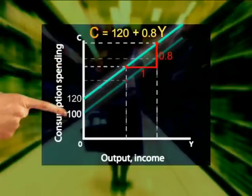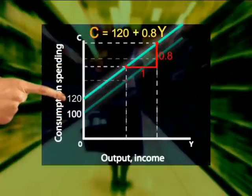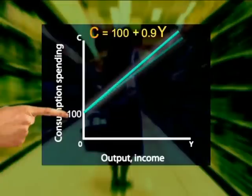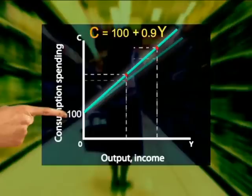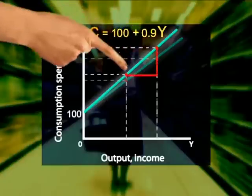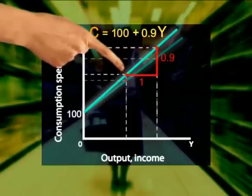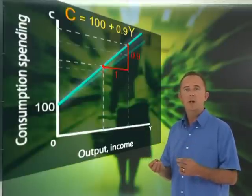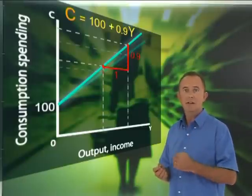And now, what if our marginal propensity to consume changes, say from 0.8 to 0.9? Well, a 100 rand rise in income now causes consumption spending to increase by 90 rand, not 80 rand. The slope of the consumption curve, determined by the increase in the marginal propensity to consume, now changes to reflect this higher percentage. The slope is now steeper, showing that for a given increase in income, the consumption spending rises more than it did before.